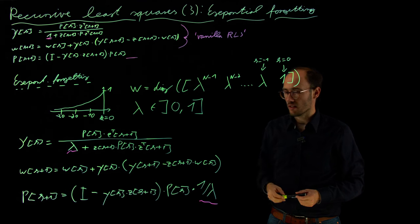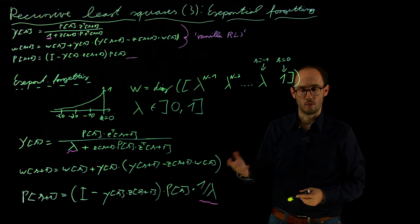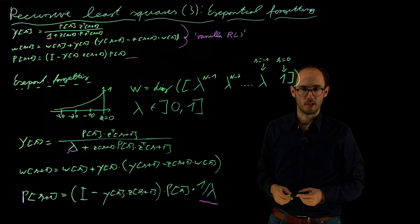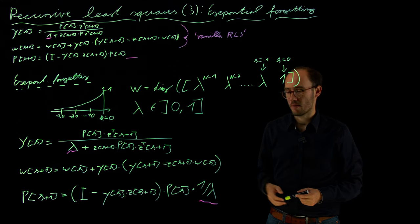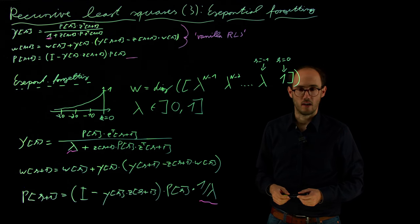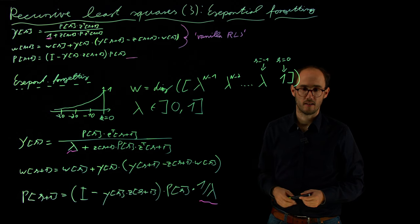We will utilize that technique in the next video to apply it to a technical example how we can utilize exponential forgetting to track basically some parameters of a technical system and to see how this can be encoded into Julia code. See you then in the next video.